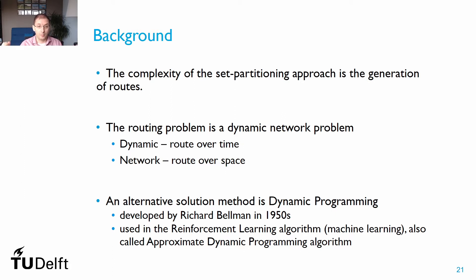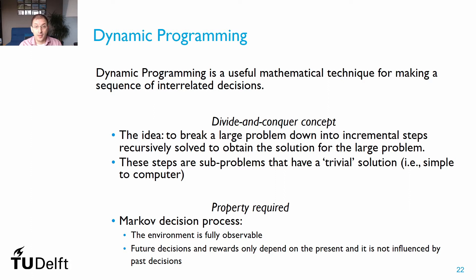Dynamic programming was developed by Richard Bellman in the 1950s, but interest in this technique has increased in recent decades due to its use in reinforcement learning, sometimes also called approximate dynamic programming. This is a machine learning technique in which we teach an agent — the computer — to make decisions based on the context we are experiencing. Dynamic programming is a mathematical technique useful for solving problems requiring sequential and interrelated decisions, following a divide and conquer concept.